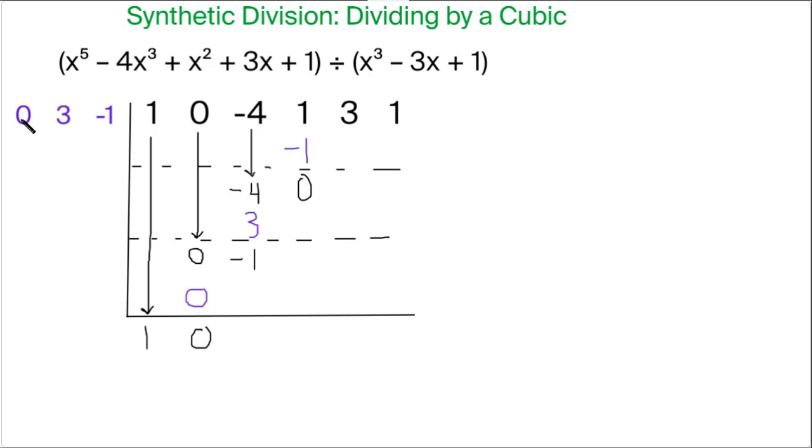So to work through it, 0 times 0 is this 0, 3 times 0 is this 0, and negative 1 times 0 is this 0, and of course we add again.